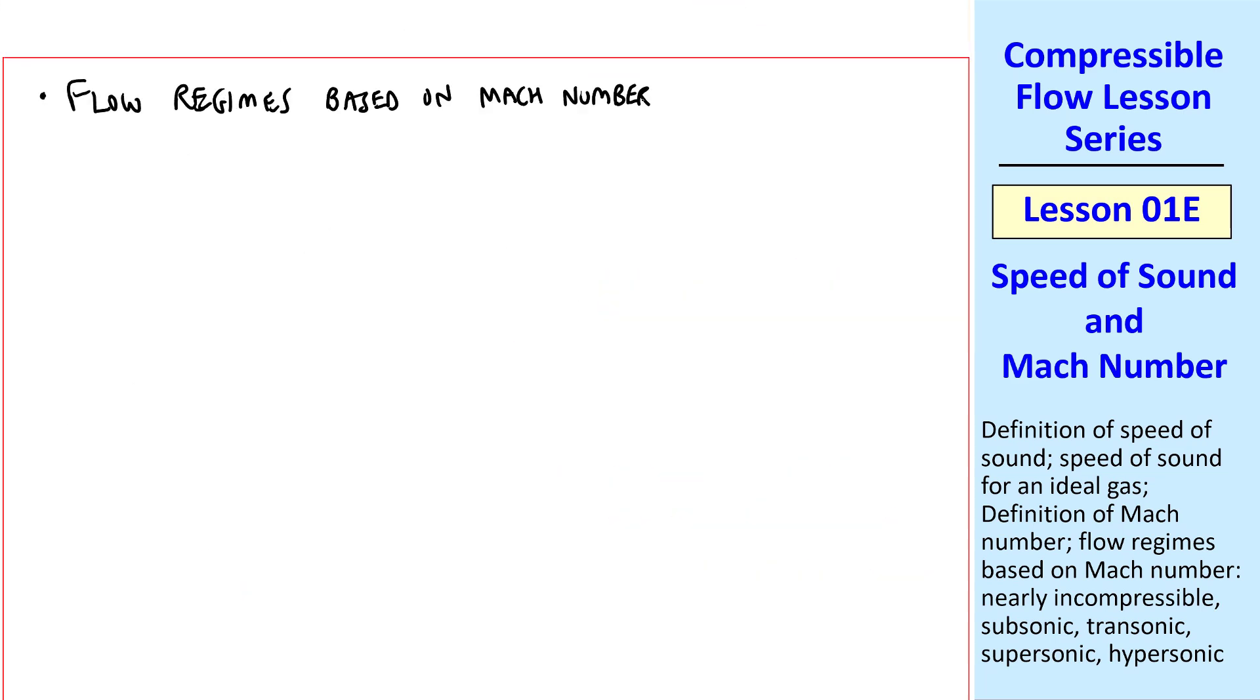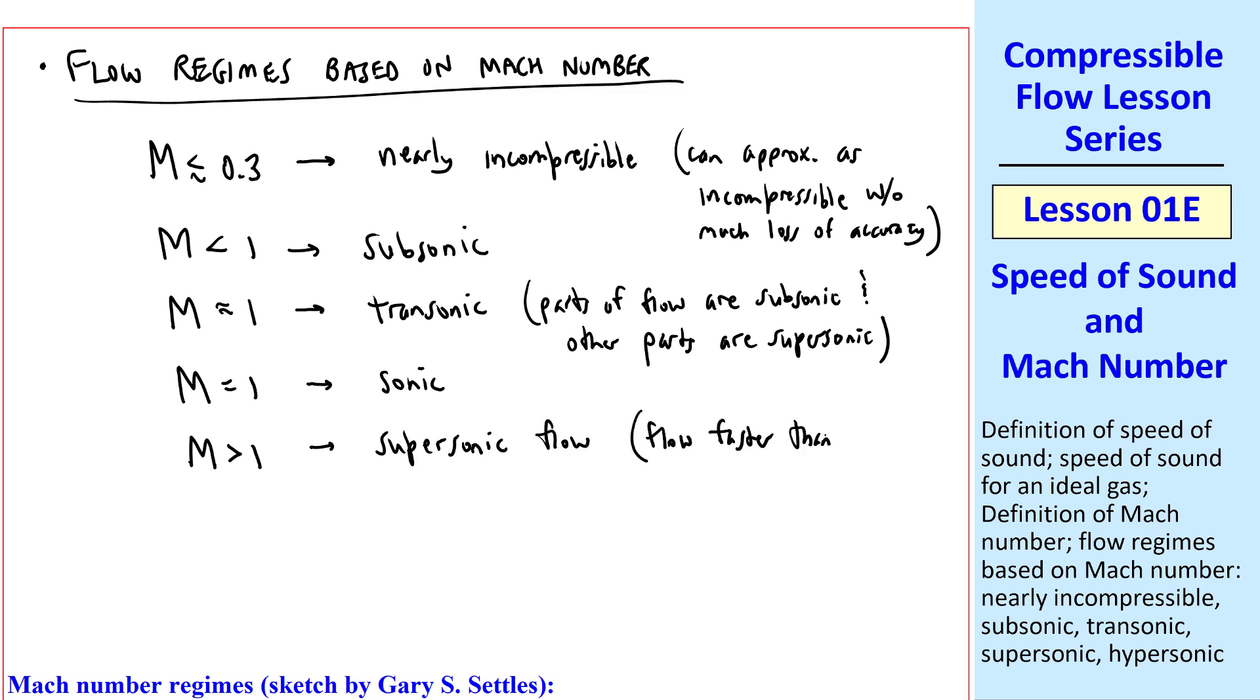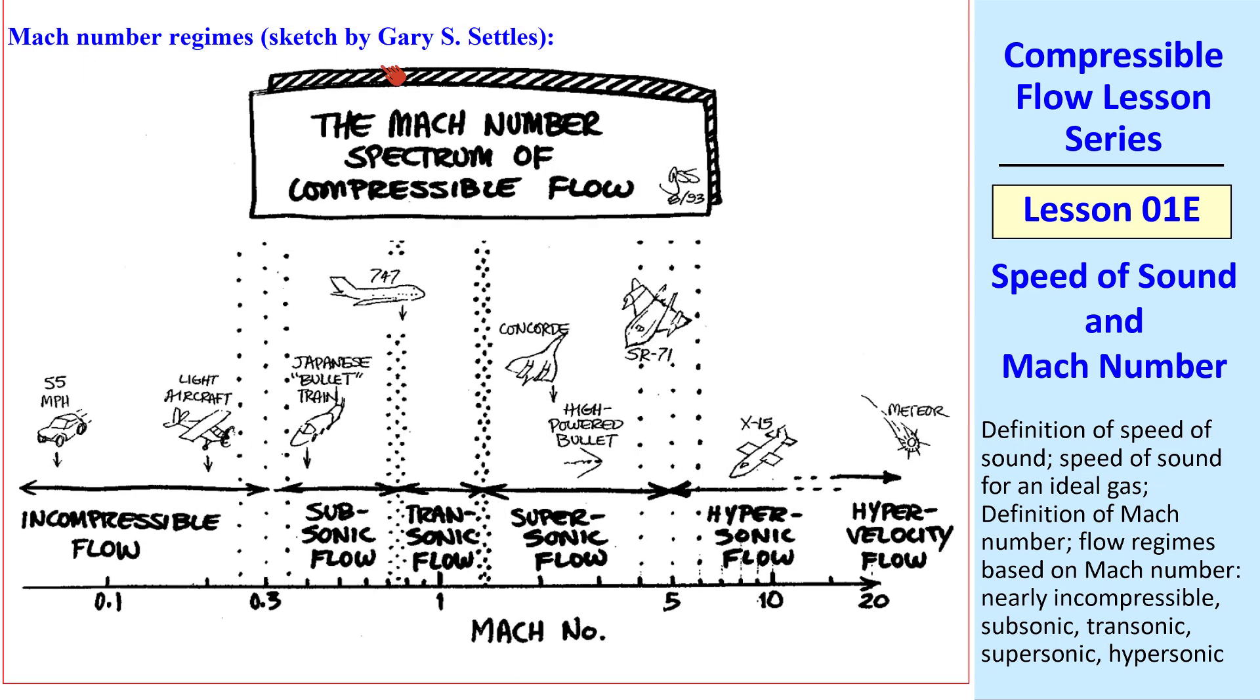Now let's discuss the flow regimes based on Mach number. If Mach number is less than about 0.3, we say that the flow is nearly incompressible. You can approximate it as incompressible without much loss of accuracy. When you're around Mach number of 0.3, the error is less than 5%, typically. When Mach number is less than 1, we call the flow subsonic. When Mach number is near 1, we call it transonic. Typically, this means that parts of the flow are subsonic and other parts of the flow are supersonic. When M is equal to 1, this is called sonic flow. And when M is greater than 1, this is called supersonic flow. Which means the flow is faster than the speed of sound. When Mach number is real high, like greater than 5, we call that hypersonic flow.